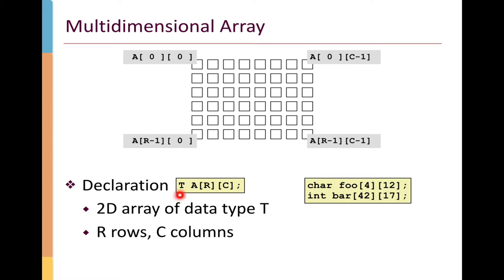Here's the declaration of a two-dimensional array. It has a type T, so the individual elements in the array are of that type. The array itself is called A, with R rows and C columns. For example, here's a character array called foo with four rows and 12 columns, and an integer array called bar with 42 rows and 17 columns. The type T tells us the basic type stored in each element.